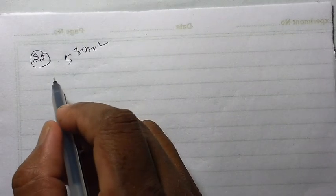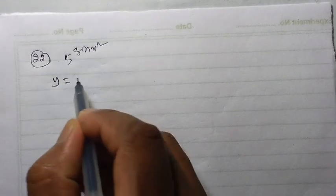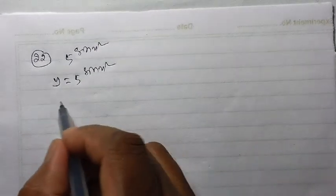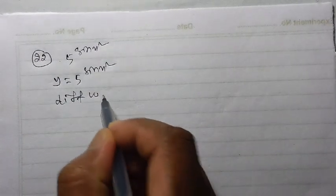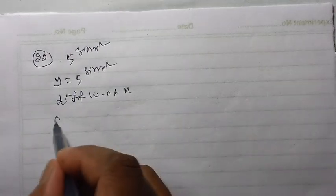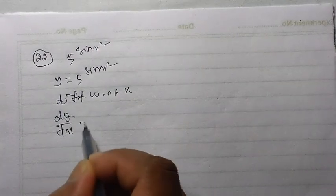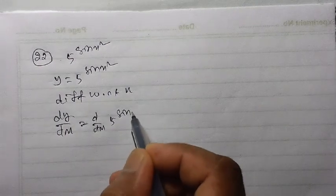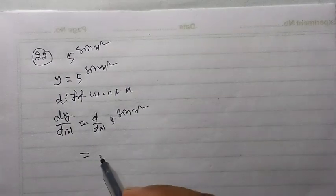5 to the power sin x square. I have to find the derivative of this function. I can write y is equal to 5 to the power sin x square. Differentiate with respect to x.